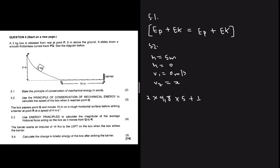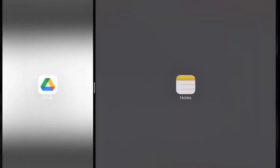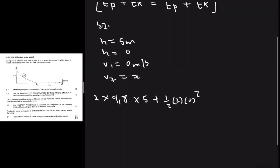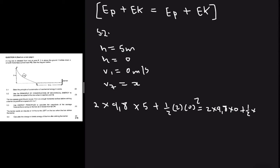The kinetic energy at the top is one-half multiplied by 2 multiplied by 0 squared, because the box starts from stationary. This equals the potential energy at the bottom, which is 2 multiplied by 9.8 multiplied by 0 — because the height at point Q is zero — plus one-half multiplied by 2 multiplied by vf squared.